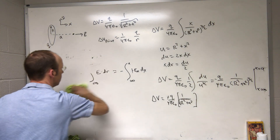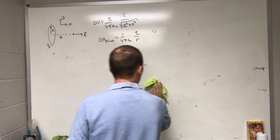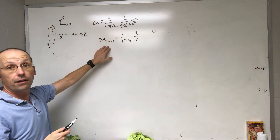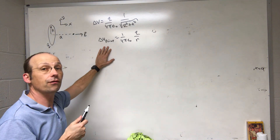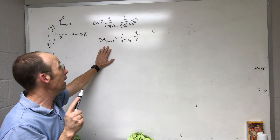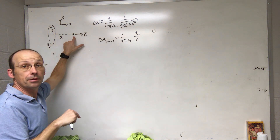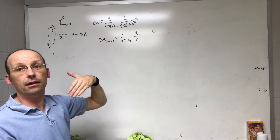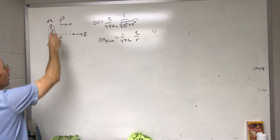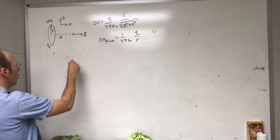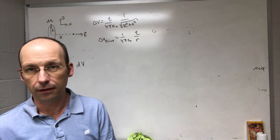Now let's do it a second way. The electric potential due to a point charge is (1/4πε₀)(q/r), and electric potential obeys the superposition principle — just like the electric field. So if I break the ring into a bunch of point charges dq, find the potential due to each, and add them up, I get the total potential. I'll call this dV — using V to represent potential with respect to infinity, which is very common.